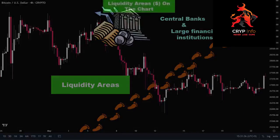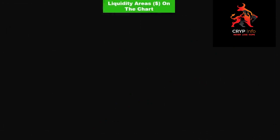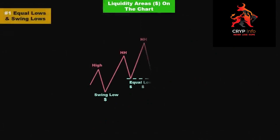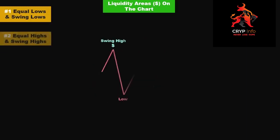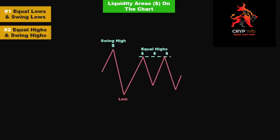Liquidity can be identified in various areas on the price chart. Some examples include equal lows and swing lows — liquidity can often be found below previous equal lows or swing lows, as these levels may attract buying interest and result in an accumulation of orders. Similarly, liquidity can be observed above equal highs or swing highs, where selling pressure may accumulate.